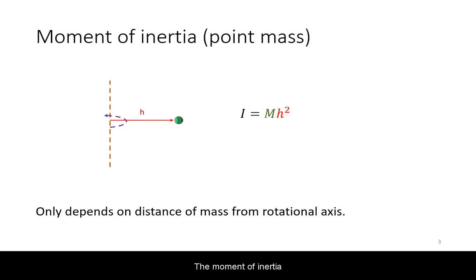The moment of inertia of a point mass is equal to the product of the mass times its distance from the rotational axis squared.